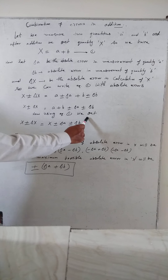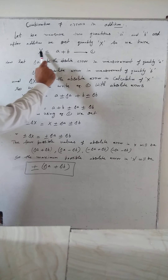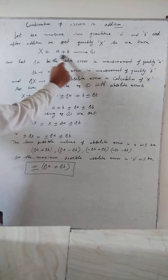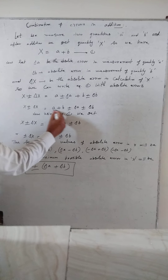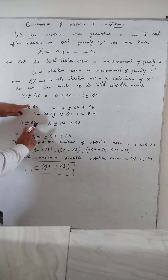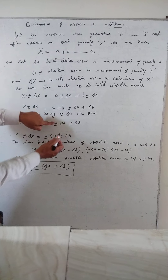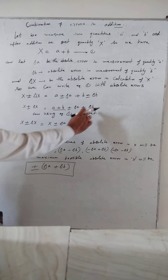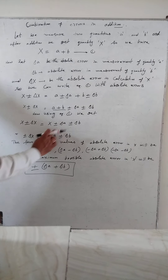अब इसमें equation 1 को utilize करना है. Equation 1 में A plus B is equal to X है, तो जहाँ A plus B है उसकी जगह X रखेंगे. So: X plus-minus delta X = X plus-minus delta A plus-minus delta B. X दोनों तरफ से cancel होगा. क्या बचा? Plus-minus delta X equal to plus-minus delta A plus-minus delta B.